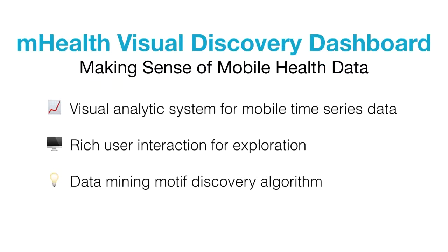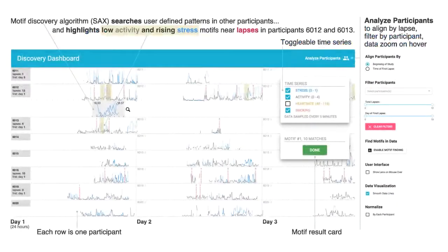Here is a quick screenshot. The main part of the Discovery Dashboard shows data for participants — each row is one participant. We'll go through the details about what we're showing and what the different colors mean. Like any visualization tool, you can expect to see interactive functions such as filtering. For example, you can show only participants who have smoking lapses, or align all participants based on when they lapse, which is helpful for finding patterns across all participants.